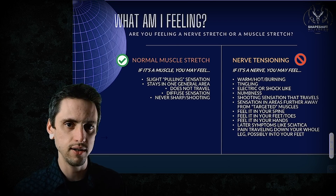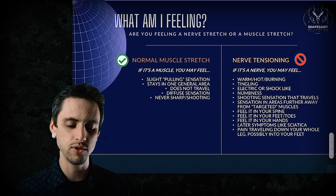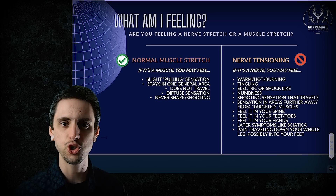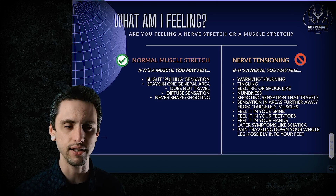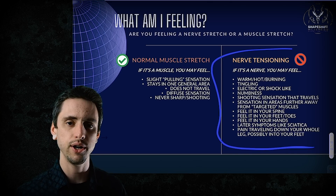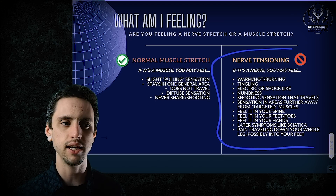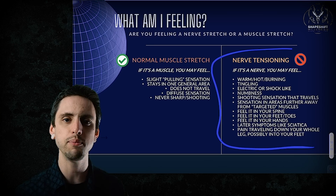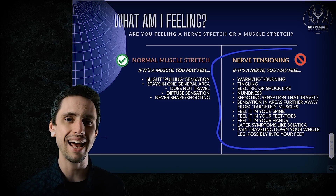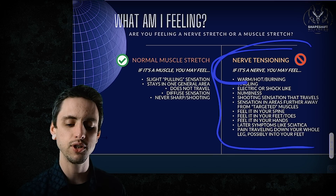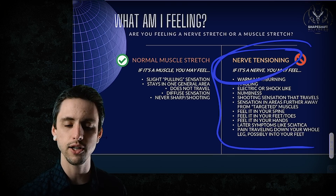So how do you tell the difference between a muscle stretch and a nerve stretch? A muscle stretch will stay in the same spot and won't feel sharp, shooty, or tingly, and you won't feel it move. Nerve tensioning is where you feel electric sensations, numbness, tingling, shooting sensations, burning, or hot heat. You might feel it go up your spine or down your legs into your toes or arms. You might start to develop sciatica-type symptoms — pain down the back of the leg, maybe into your feet. If you feel any of that, you're probably stretching nerves, and you should stop.